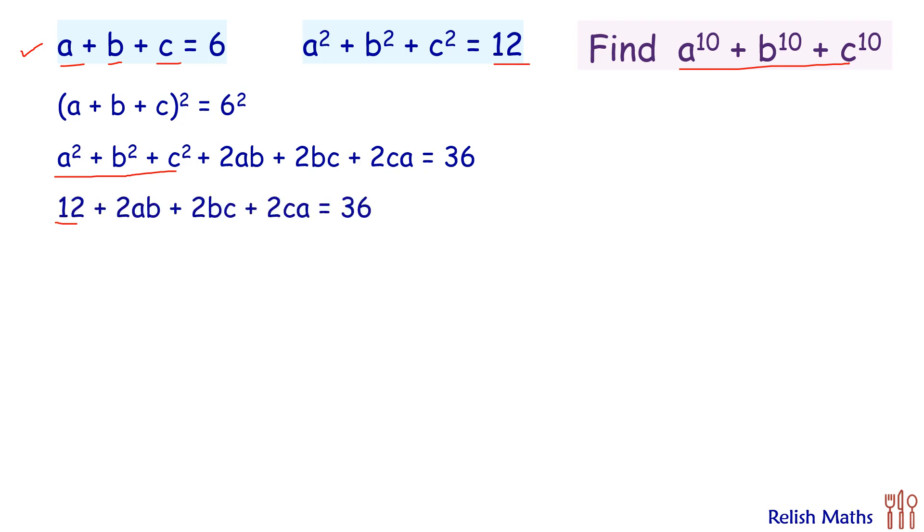Now this 12 will take on the other side, so we'll get 24 on the right-hand side. This 24 we can write as 2 times 12, and that 12 we can replace by a squared plus b squared plus c squared.